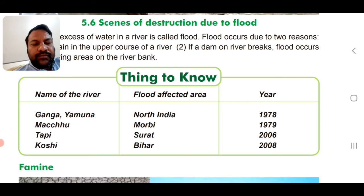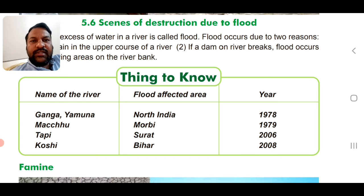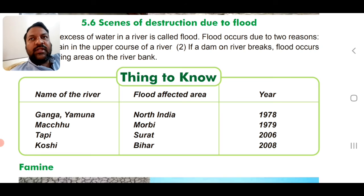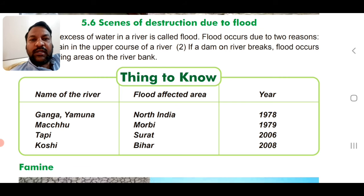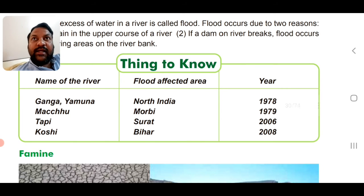The reason floods are becoming worse is human encroachment on natural water flow areas. In Bhavnagar, for example, there is a low-lying area called Bortalao. When construction happens in such natural drainage areas, when rain comes the water fills those areas. We have increased population and construction without understanding that these are areas of natural water flow.